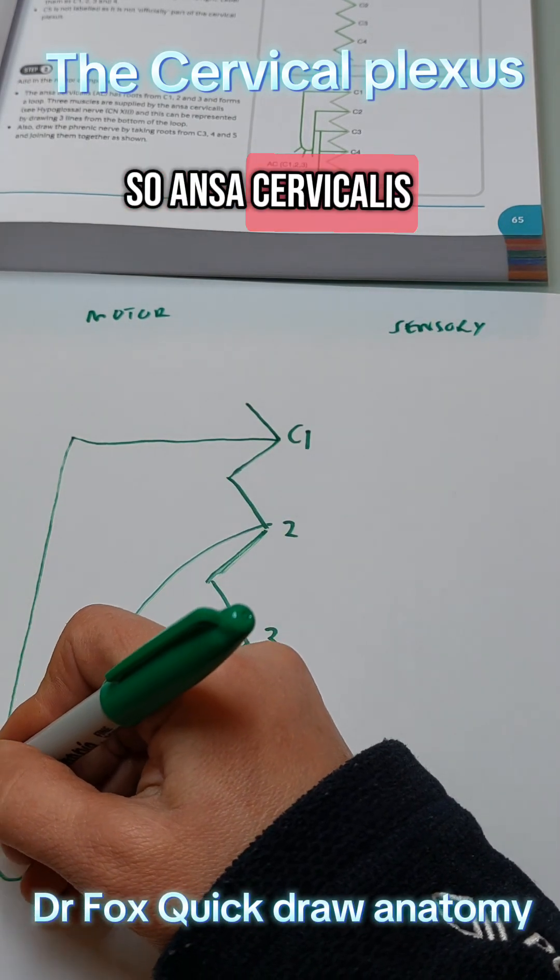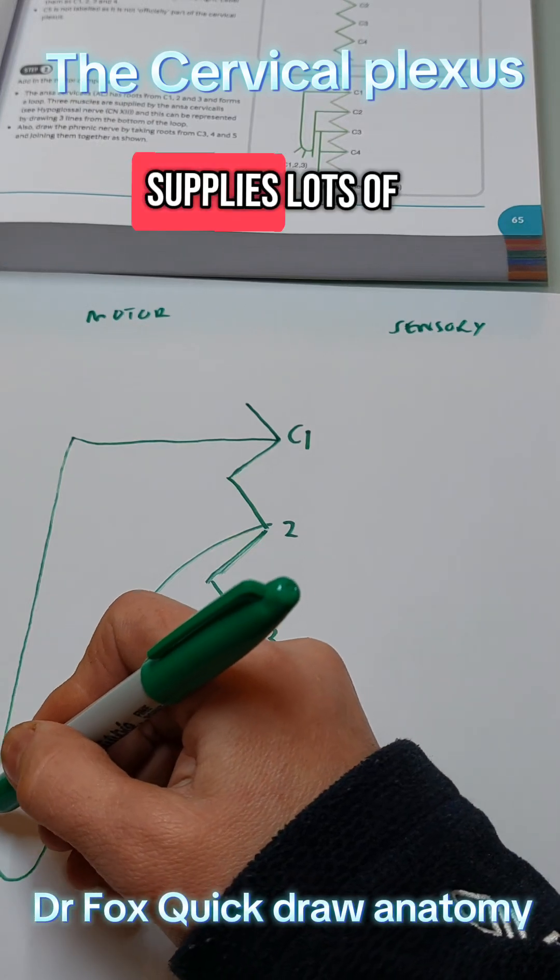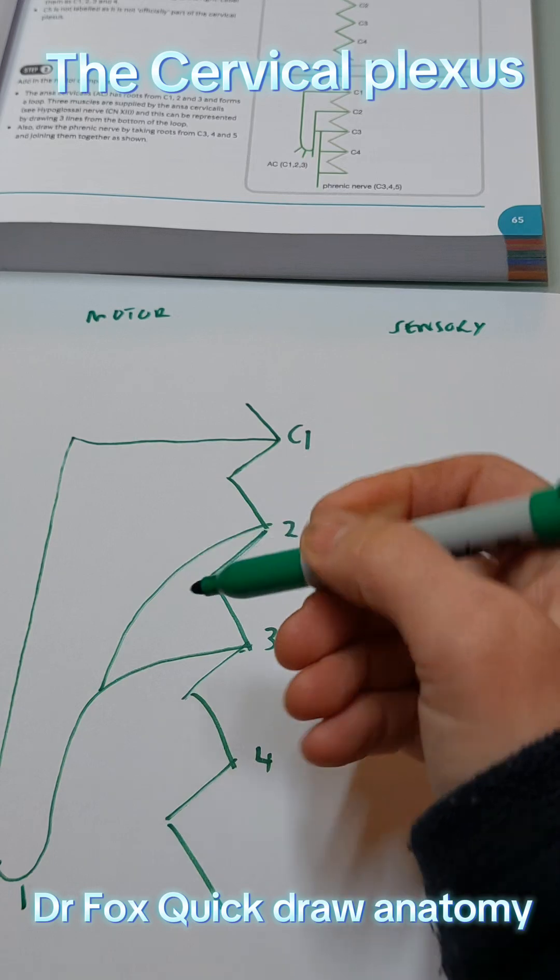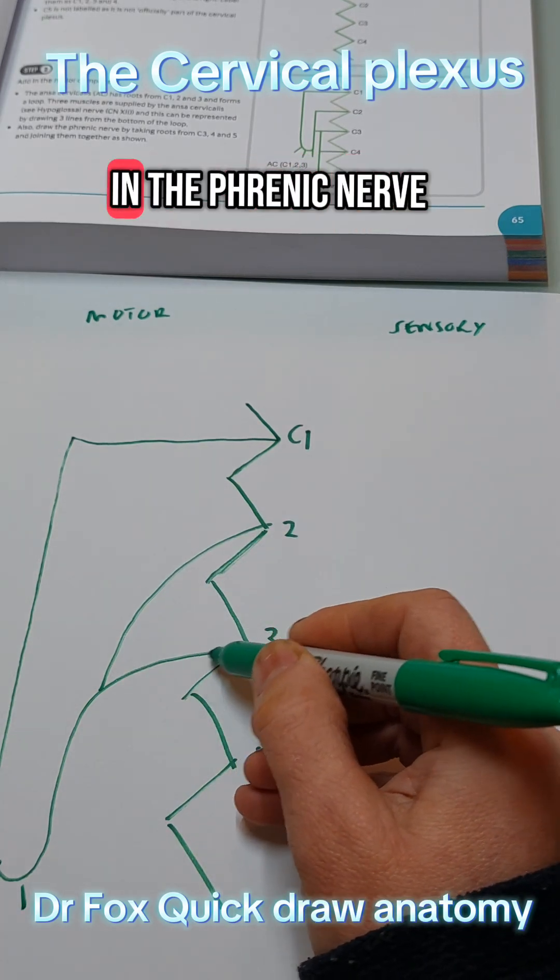So Ansa cervicalis, this supplies lots of the muscles and then I'm also going to add in the phrenic nerve.